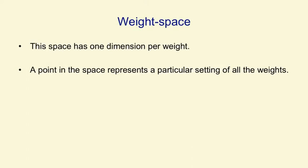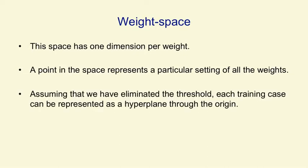So we're going to start off by thinking about weight space. This is a space that has one dimension for each weight in the perceptron. A point in the space represents a particular setting of all the weights. Assuming we've eliminated the threshold, we can represent every training case as a hyperplane through the origin in weight space. So points in the space correspond to weight vectors, and training cases correspond to planes.